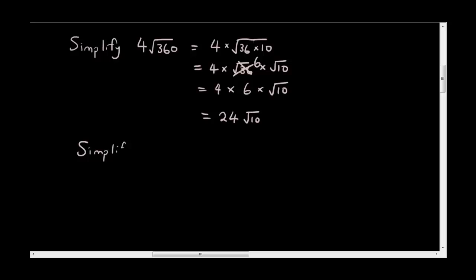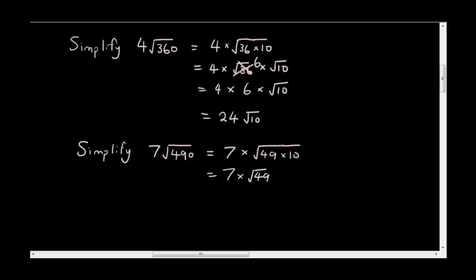Using the same principles, try to simplify 7 times the square root of 490. Have a go and come back when you're done. So to do this question, I'm going to rewrite the numbers inside the square root sign as 49 times 10. Then I break it down into 2 square roots, and rewrite the square root of 49 as 7. So the answer is 49 times square root of 10.